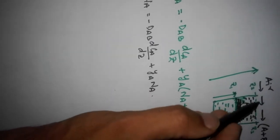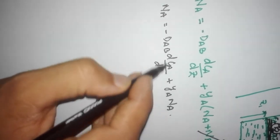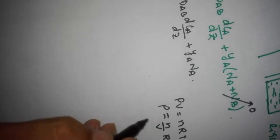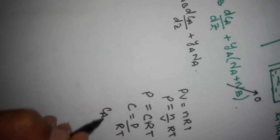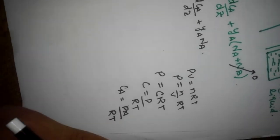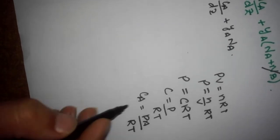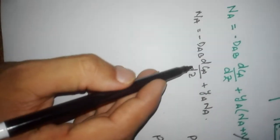Since ethanol vapor and air are both gases, the concentration can be expressed in terms of partial pressure. From the ideal gas law, PV = nRT, we get n/V = P/RT, so C = P/RT and CA = PA/RT, where R and T are constant. Therefore dCA = dPA/RT.